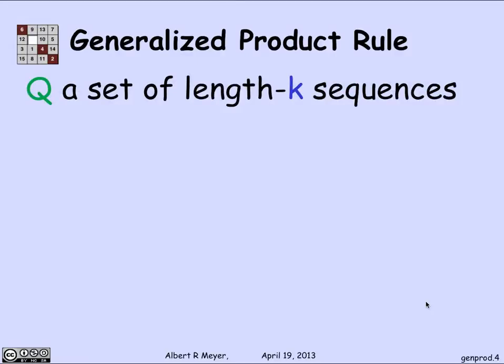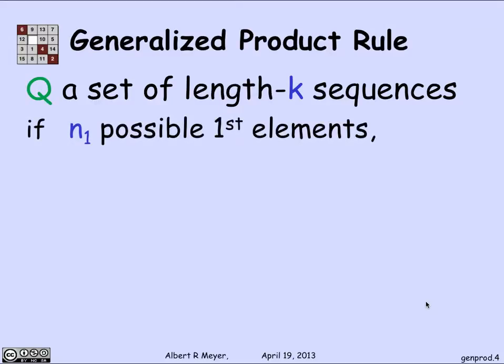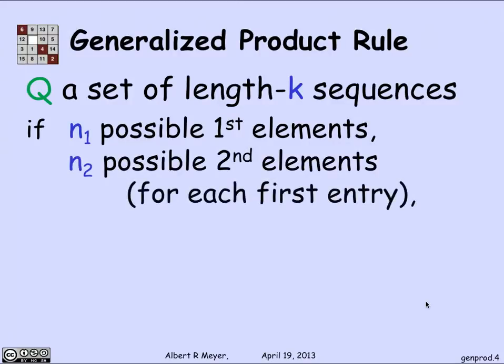So the second rule is a sort of obvious generalization of the bijection rule, but I'm getting ahead of myself. Let's state the generalized product rule in general. So if we let Q be a set of length K sequences with the following property, there are n1 possible first elements among these length K sequences. And for every one of the first possible elements, if you look at the number of tuples with what the second possible coordinates are for a given first coordinate, it's always n2.